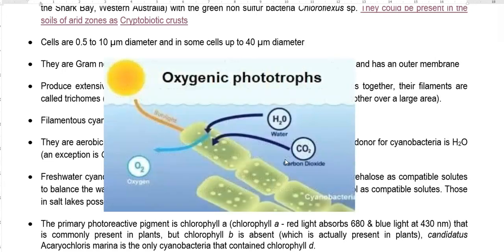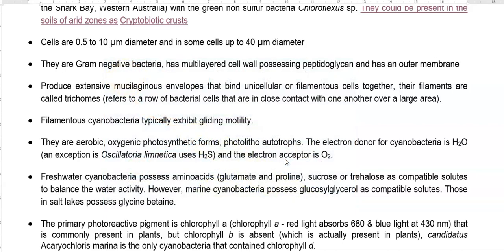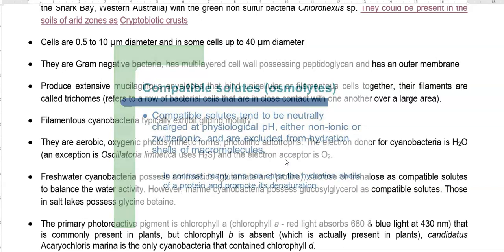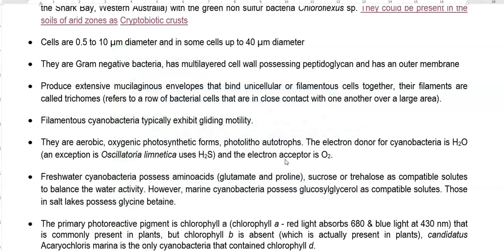The final electron acceptor is oxygen. When water is used as an electron donor, that group of cyanobacteria is technically referred to as oxygenic cyanobacteria, as oxygen is evolved as a final product. Freshwater cyanobacteria possess amino acids such as glutamate and proline, as well as carbohydrates such as sucrose and trehalose, as compatible solutes to balance water activity. Marine cyanobacteria possess glucosylglycerol, and certain salt-tolerant cyanobacteria possess glycine betaine as their compatible solute.